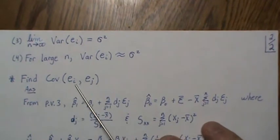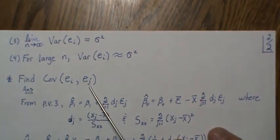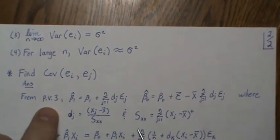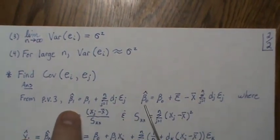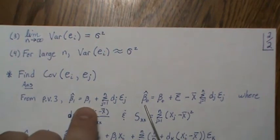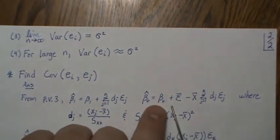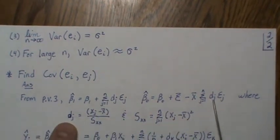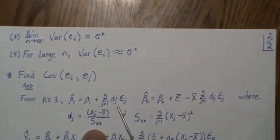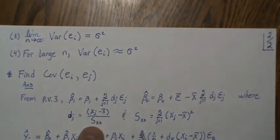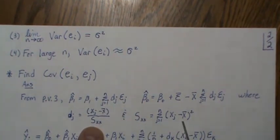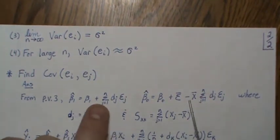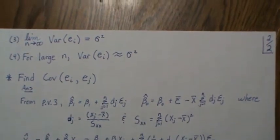We go back to previous video 3 where we rewrite the least squares estimates: β̂₀ in terms of the error terms, where d is a constant, and Sxx is the sum of (xᵢ − x̄)². When we plug in for the residuals we'll make use of this, and the fitted line is β̂₀ + β̂₁xᵢ.